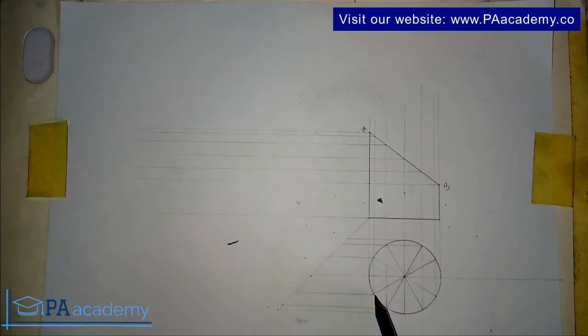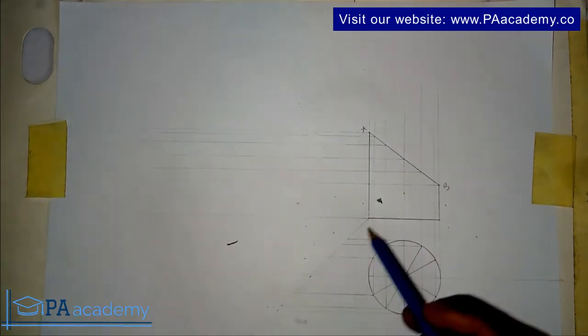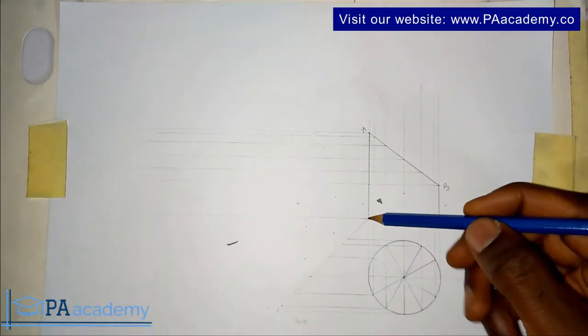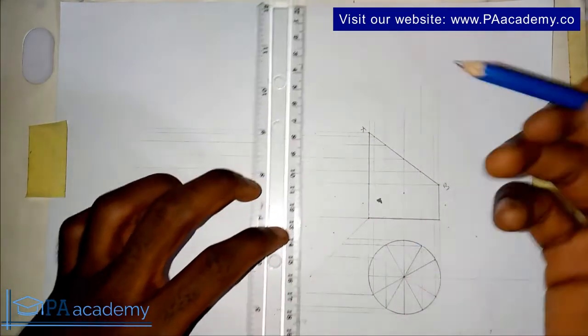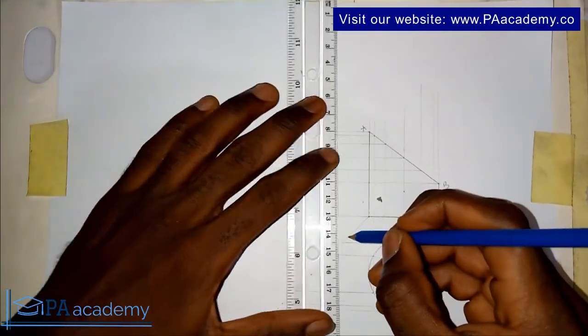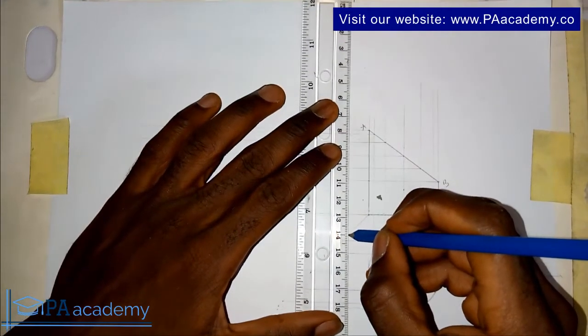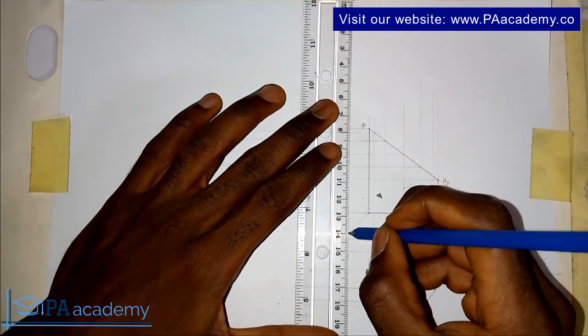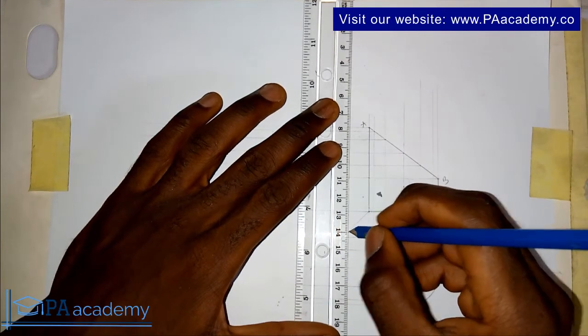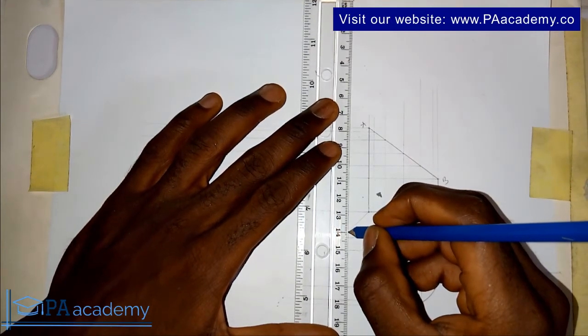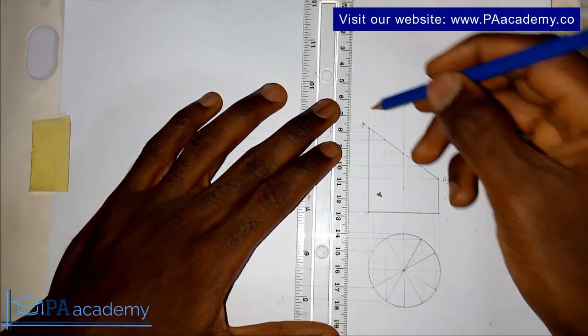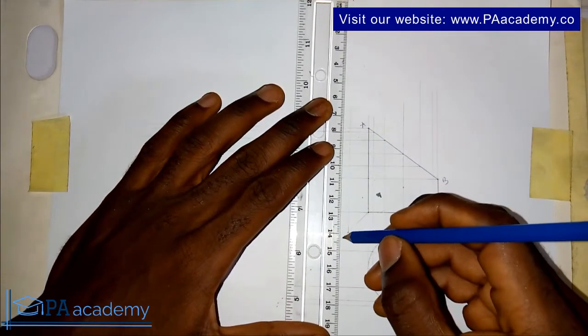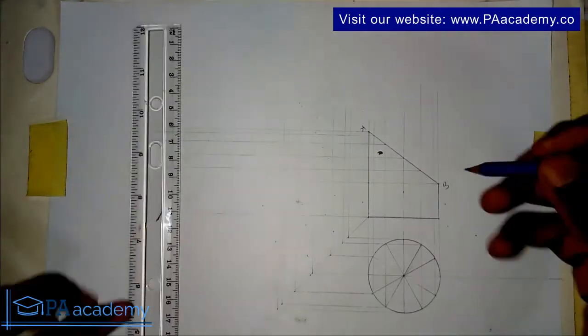I'll pause the video to save time. I'll project the horizontal line to touch this line that we drew at an angle of 45 degrees from this point. Where it's touching this, we are going to project it upward. From this point, we are going to make it a vertical projection again. Make sure they are parallel.